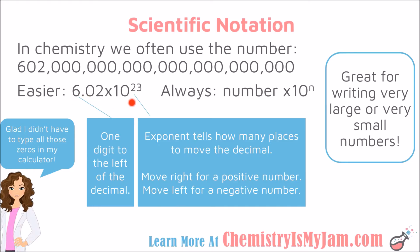To go from a number written in scientific notation to normal notation, it is important to recognize where the decimal is. In scientific notation, you write the decimal so that there is only one number to the left of it, but in normal notation that decimal would have been at the end of the number. So the exponent 23 is telling me how many spaces I moved that decimal. Since the exponent is positive, I need to move that decimal to the right to get back to the original number — 23 places to the right.